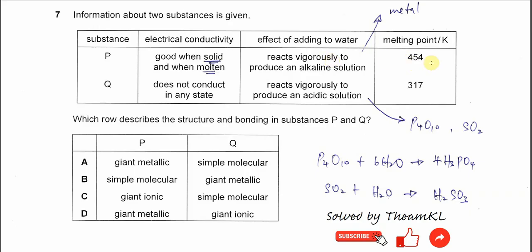Melting point is 454. Substance Q does not conduct electricity in any state. From here we know that it's a covalent compound.